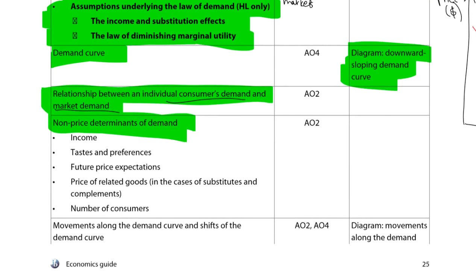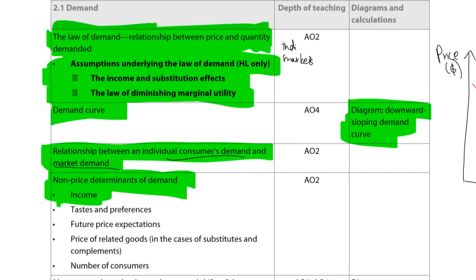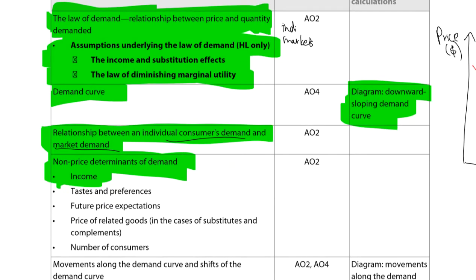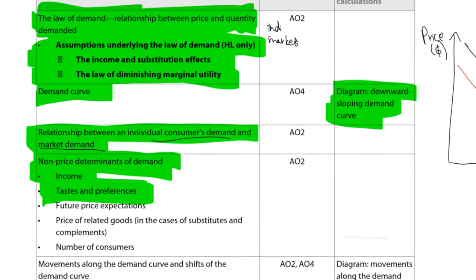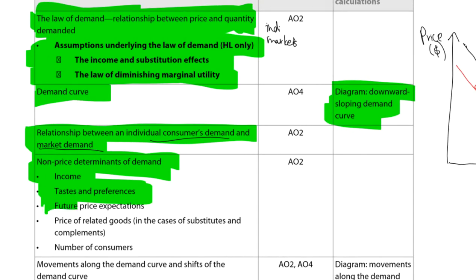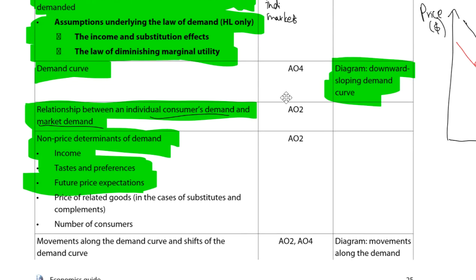Income is one non-price determinant: if income increases, a lower proportion of income is taken by purchasing a given product, so demand increases. Tastes and preferences also matter — if something is trendy, demand is likely to increase. Think about fidget spinners: when preferences worsened toward them, demand decreased. Future price expectations also play a role: if you expect a product's price to go up, you're more willing to buy now, so current demand increases. Note: be careful not to mix up 'quantity demanded' and 'demand' when writing in exams — they are two different concepts.